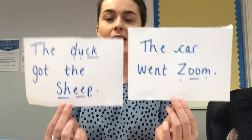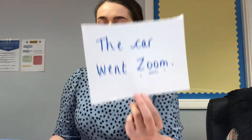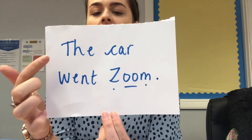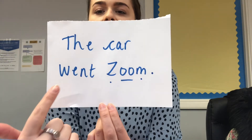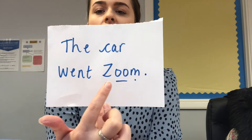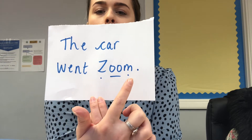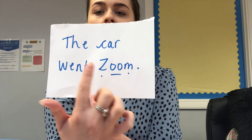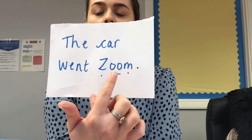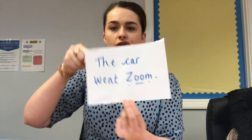I've got two sentences, so you can choose which one you would like to read and write — you might want to read one and write the other. The first one is: 'The car went zoom.' Capital letter at the start, full stop at the end.